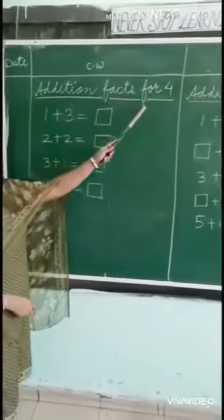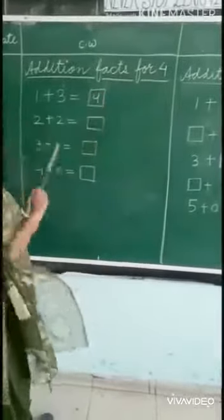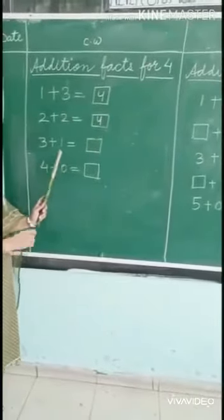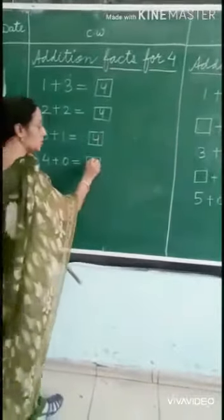Now children, we have to learn about addition facts of 4. You will hold 4 things in your hand and practice at home. You can write it with me now. Addition facts for 4: 1 plus 3 is equal to 4, 2 plus 2 is equal to 4, 3 plus 1 is equal to 4, and 4 plus 0 is also equal to 4.